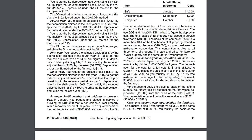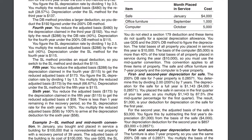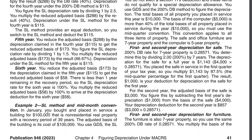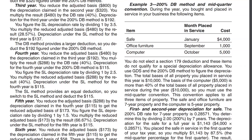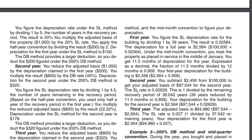I'm switching to the PDF version of the publication, which is a little easier to understand. In Example 2, we have a building placed into service in January 2023 with a cost of $100,000 as the basis. It has a recovery period of 39 years because it's non-residential real estate, and we're using the straight-line method with the mid-month convention.